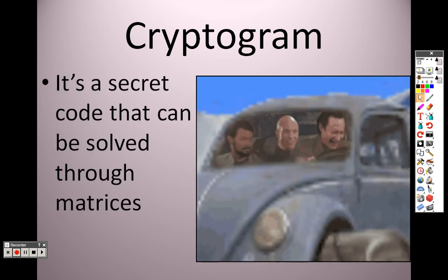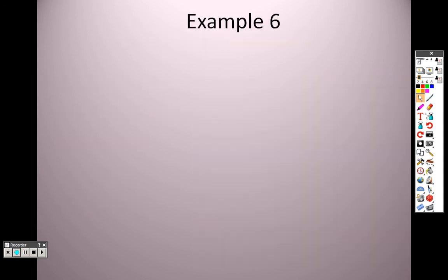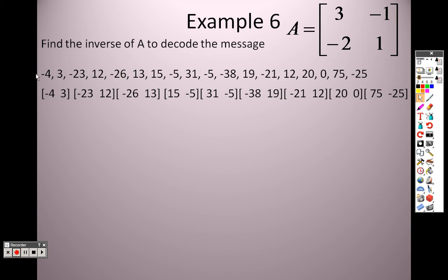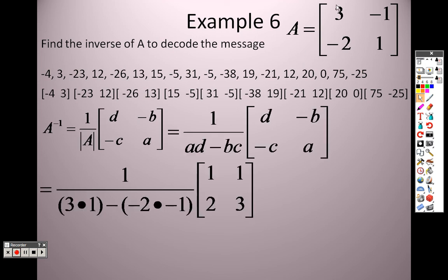Alright, so the reason that you would use something like this is for a cryptogram. And it's a secret code that can be solved through matrices. Find the inverse of A to decode the message. Basically what we're saying is here's A. If you find the inverse matrix for that, it can help you solve this code. So what we're going to do is I'm going to separate each of these into twos. And the reason why I separate them into twos is because this is a 2 by 2. And because it's a 2 by 2 matrix, I can only multiply this by something that is in a group of 2. So it would either have to be a 2 by 1 or it would have to be a 1 by 2. And since they're all going across, that's why I made them in groups of 2, because this is a 2 by 2. And remember you can't multiply matrices together unless they have the same middle term. So I've got to find the inverse of this.